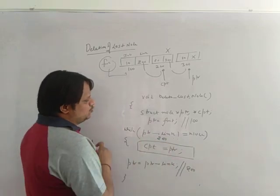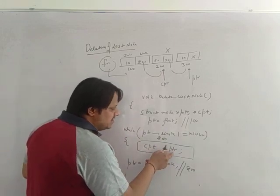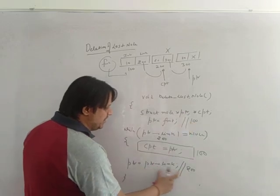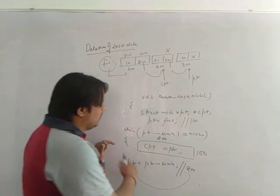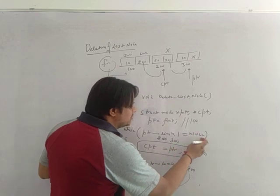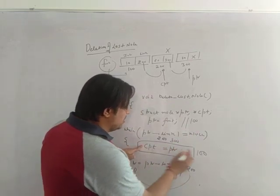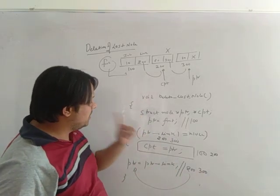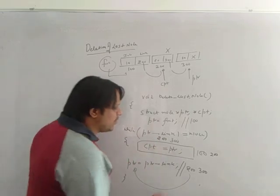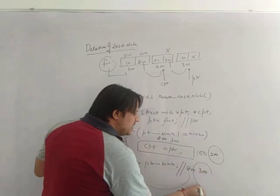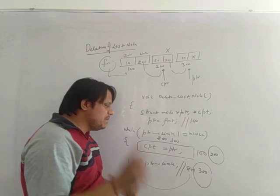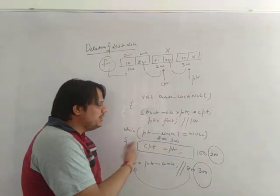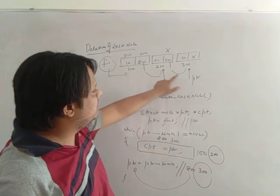Continuing the trace: iteration two — ptr is 200, 200 link is 300, not equals null, condition true, cpt equals 200, ptr moves to 300. Iteration three — 300 arrow link is null, null not equals null — condition false, exit loop. At this point cpt is pointing at 200 and ptr is pointing at 300.